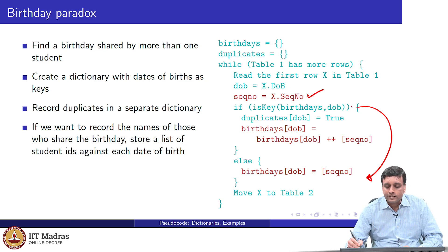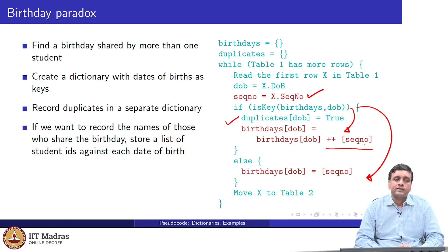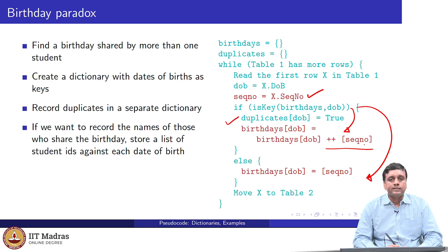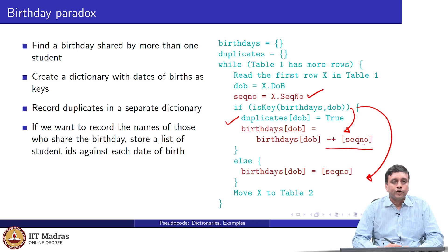So the first time we see a date of birth, we create an entry in birthdays with that key — the key is still the date of birth — but the value now is a list containing the sequence number of the student who had that birthday. When we do the duplicate check and find that the key already exists, we set duplicates to true to record which dates of birth were duplicate, and we also append this sequence number to the list of sequence numbers associated with that particular birthday. At the end of this processing, duplicates tells us which keys have multiple students sharing the same birthday, and birthdays gives us the list of those students.